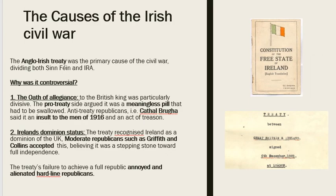The main cause of the Irish Civil War was the Anglo-Irish Treaty, and this treaty divided both the Sinn Féin party and the IRA. There are a number of things within the Anglo-Irish Treaty that really divided Ireland and divided Irish politicians, so we're going to look at these now.